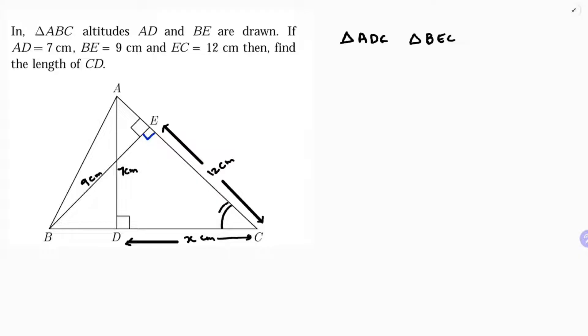If you observe these two triangles, angle C is common in both. Angle C equals angle C. To show these triangles are similar, first I have angle C common between triangles ADC and BEC. The other angles are: angle ADC is 90 degrees and angle BEC is also 90 degrees.